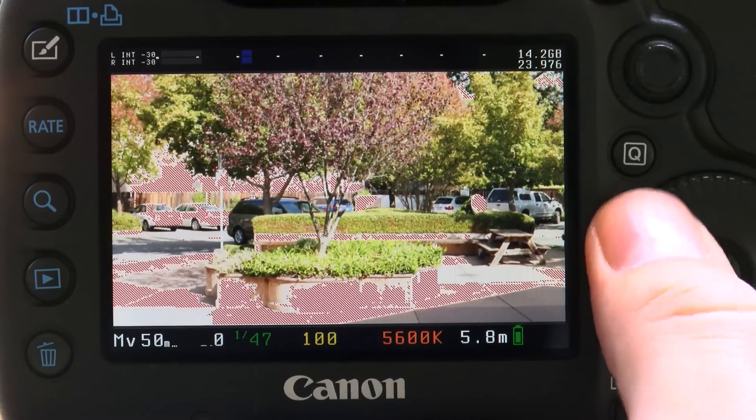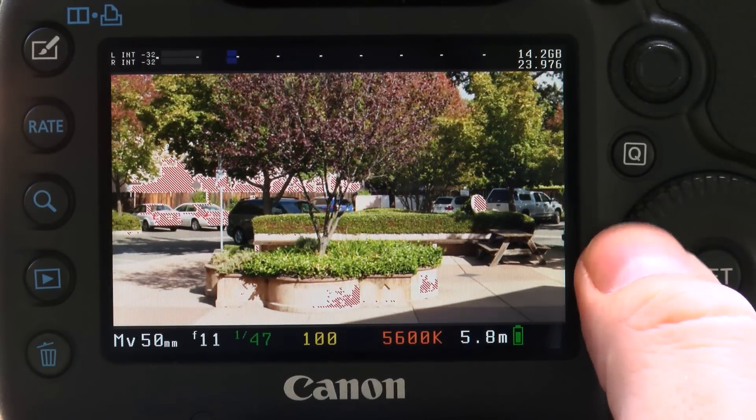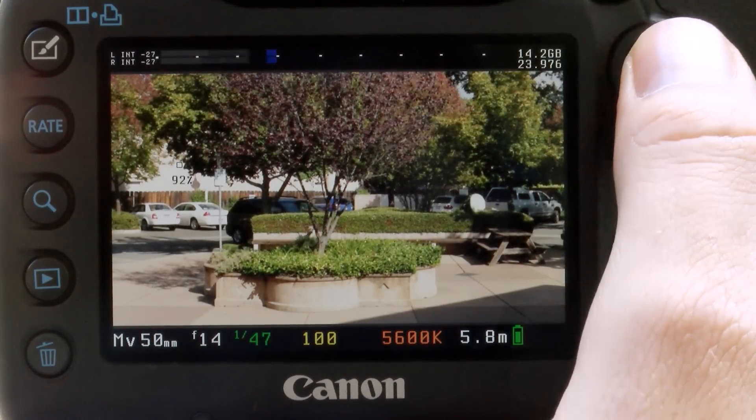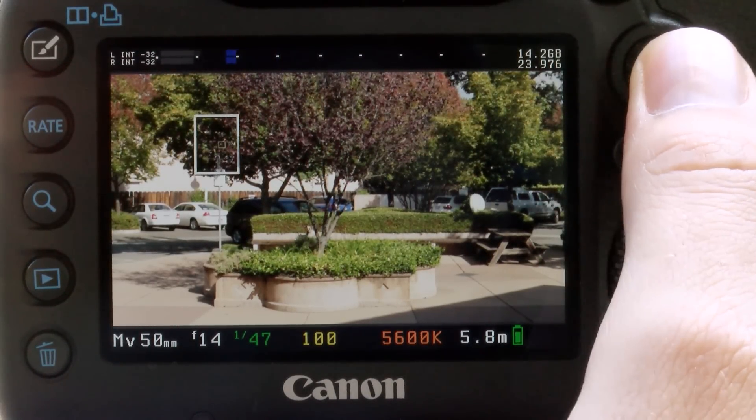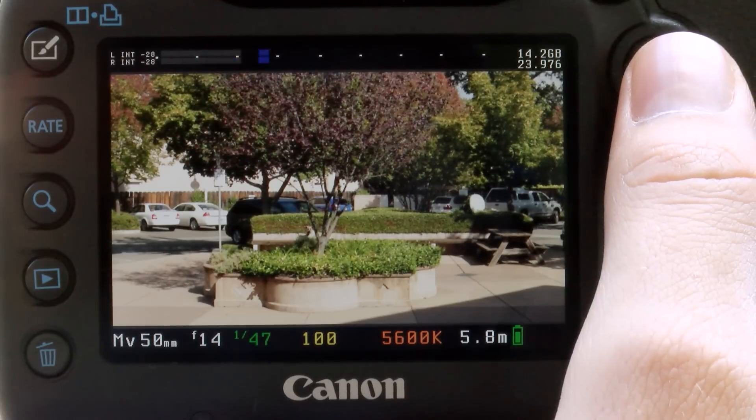Being able to switch on zebras to see when you're overexposed, or put a spot meter on a point to see if you're under or overexposed and exactly what the IRE value is, is extremely handy and a tool that we've come to rely on.